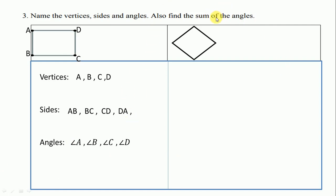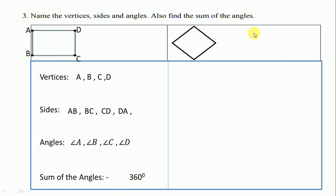Last, we have to write the sum of the angles. The sum of the angles of any quadrilateral is 360 degrees. So we write here 360 degrees. Next, we label the figure K, L, M, and N.